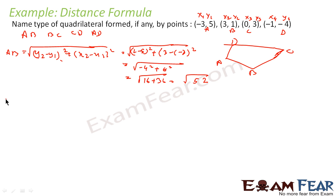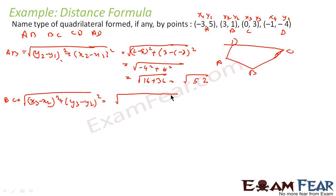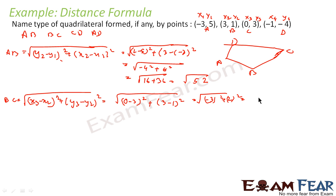Similarly, let me find BC. BC is the distance between x2, y2 and x3, y3. It comes out to be root of (x3 minus x2) squared plus (y3 minus y2) squared. x3 is 0, x2 is 3, so 0 minus 3 squared, plus y3 is 3 and y2 is 1, so 3 minus 1 squared — that is minus 3 squared plus 2 squared — root of 9 plus 4 — that is root of 13.